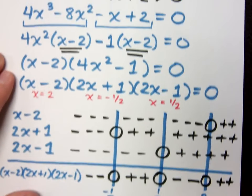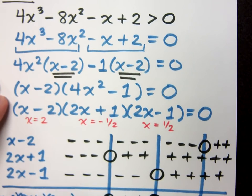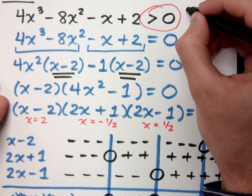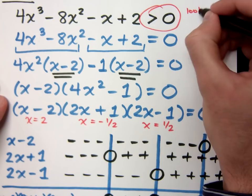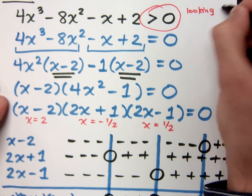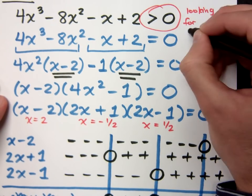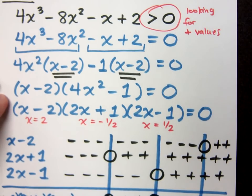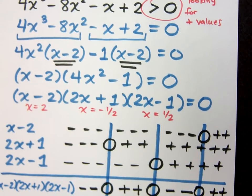Now look back at your original statement here so we can see what we're looking for. This greater than or equal to 0 meant that I was looking for positive values. So I've got my sign chart down here. Where are my positive values?